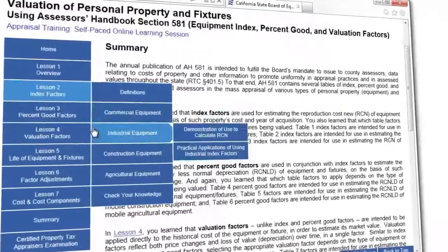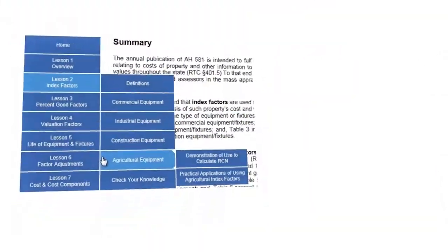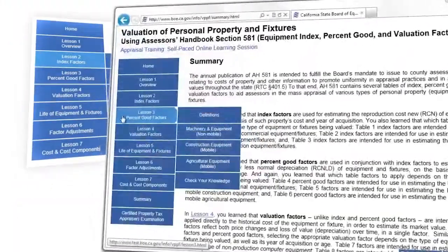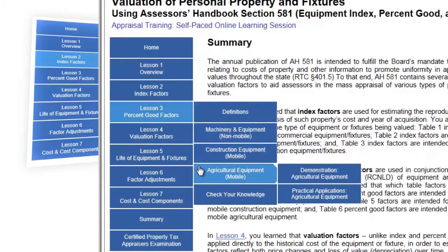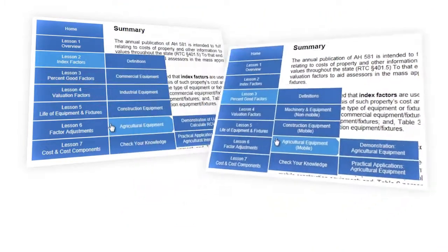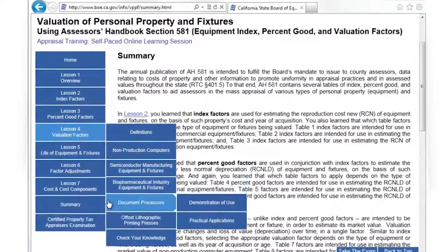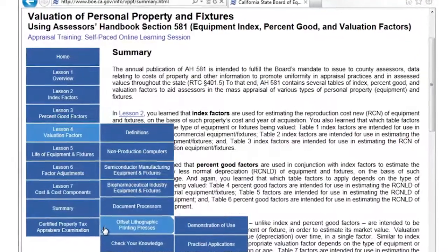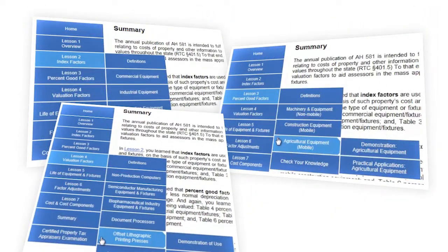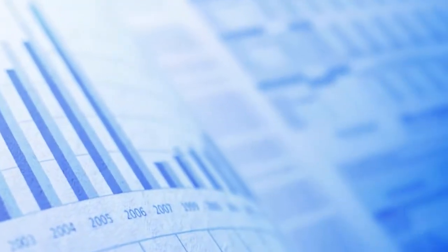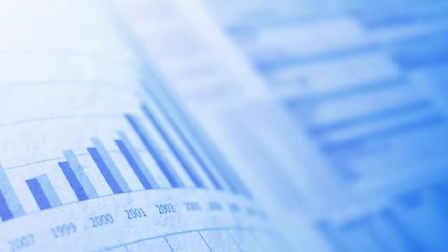By the end of the session, you will understand the purpose and basis of each type of factor found in Assessor's Handbook, Section 581, and know how to use the factors presented in the Handbook to calculate an estimate of value for taxable personal property and fixtures as of a specific property tax lien date.